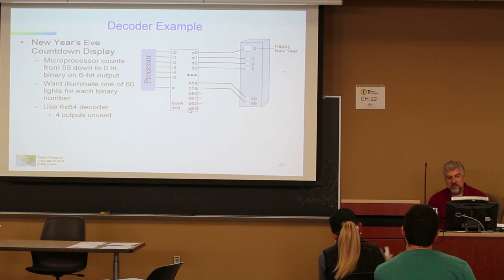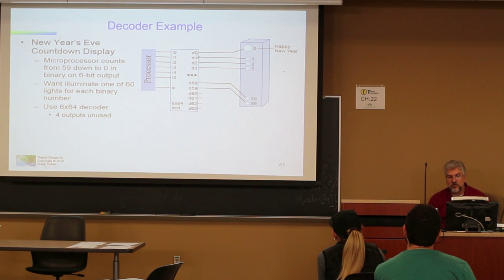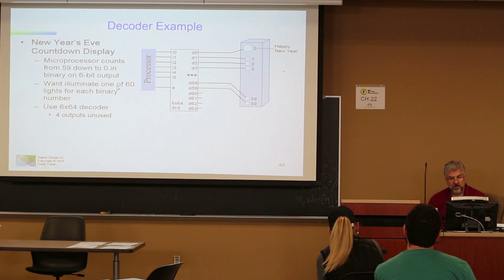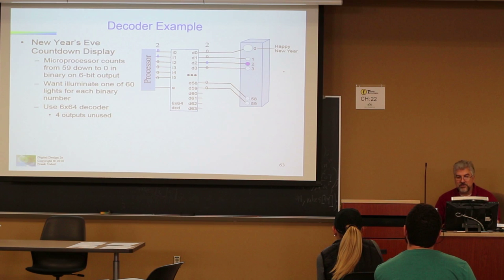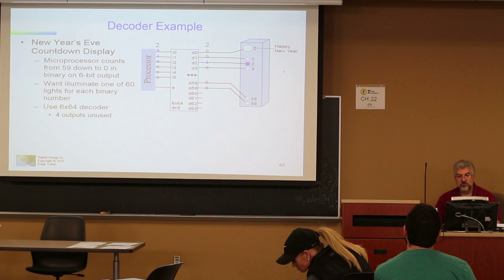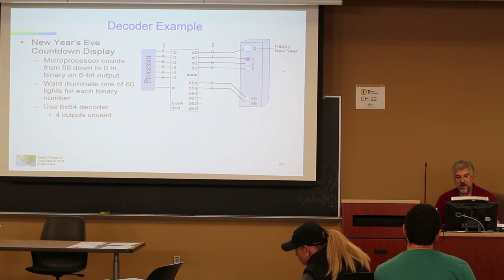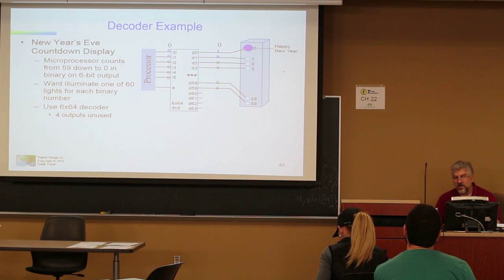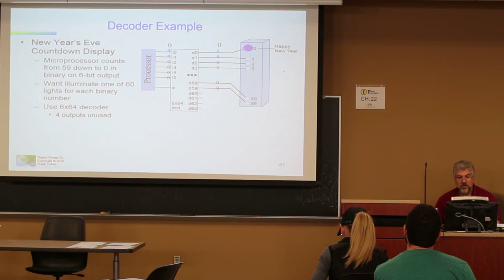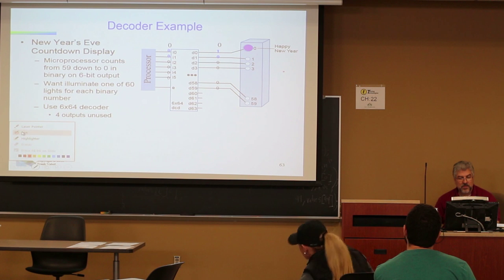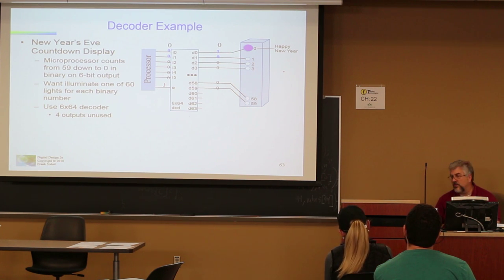2 to the 6th is 64, so what you have is an enable, 6 lines coming in representing data, and then 64 individual outputs. Each one of these can be hooked up to an individual light that lights up as it counts down. Notice this says D63 — because you have 64 different outputs and we start counting at 0. So it counts down: 2, 1, 0 — Happy New Year! The enable input would also have a 1 on it.